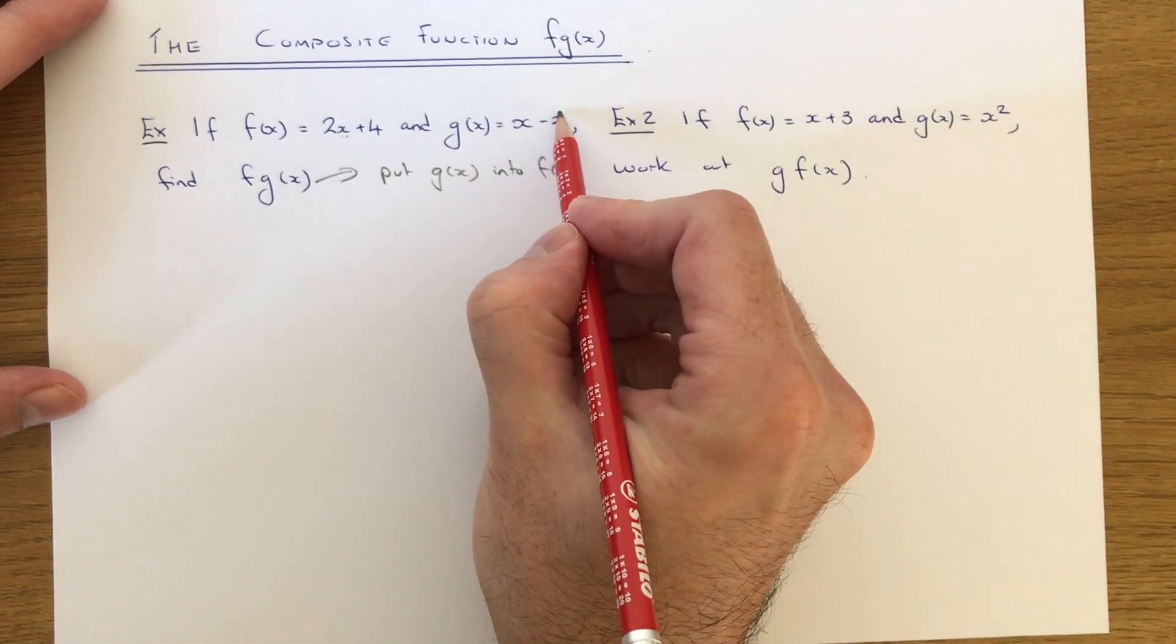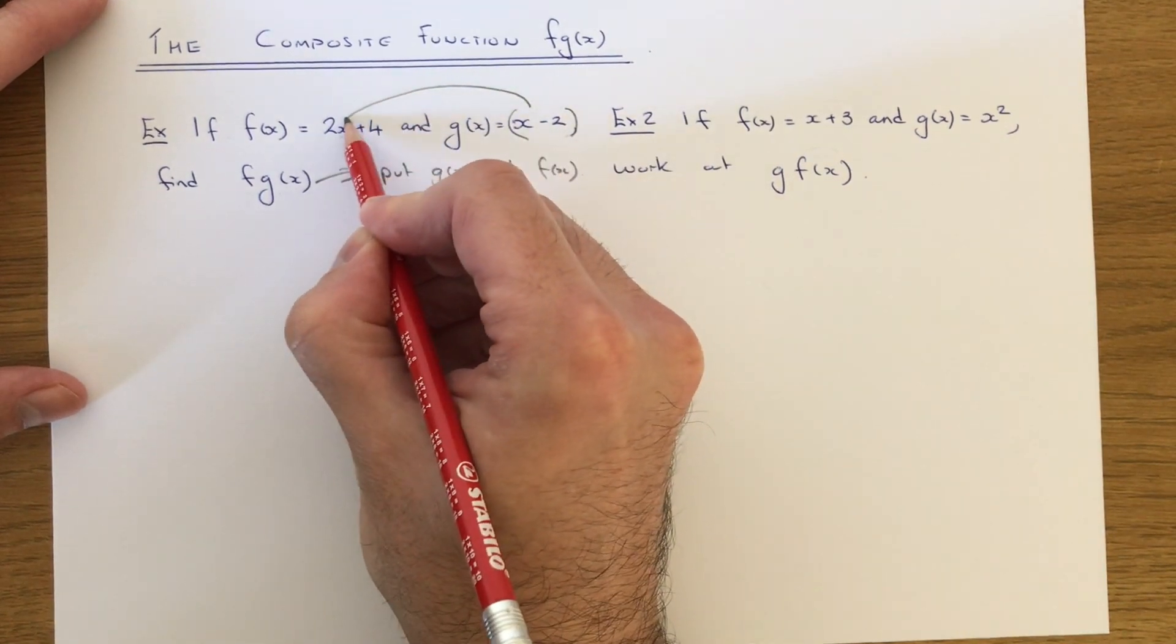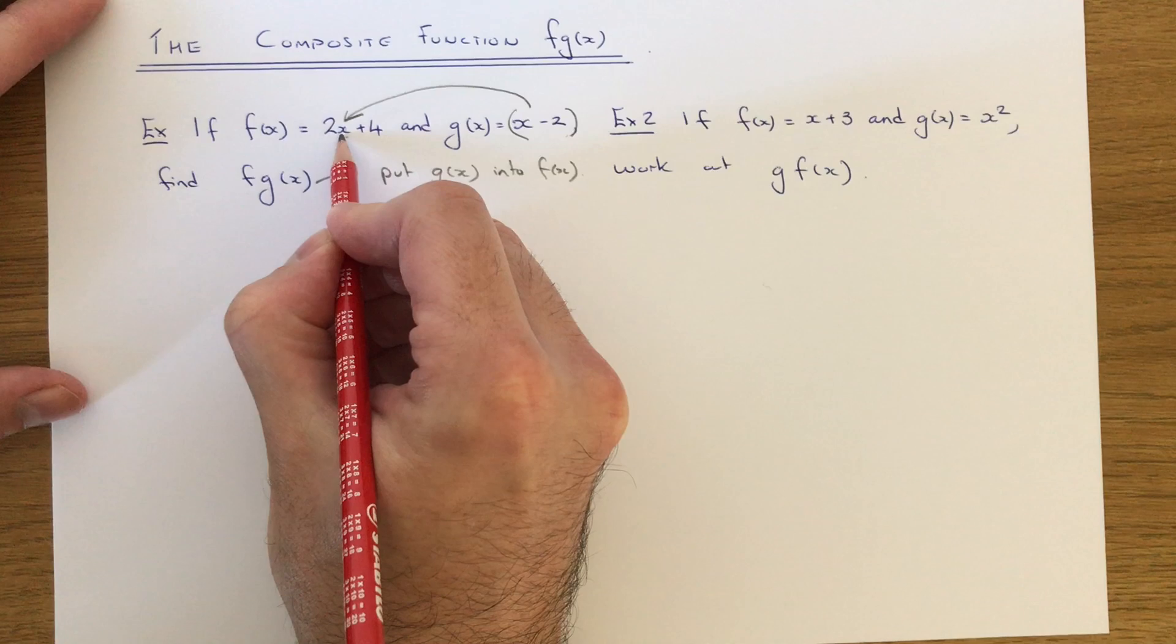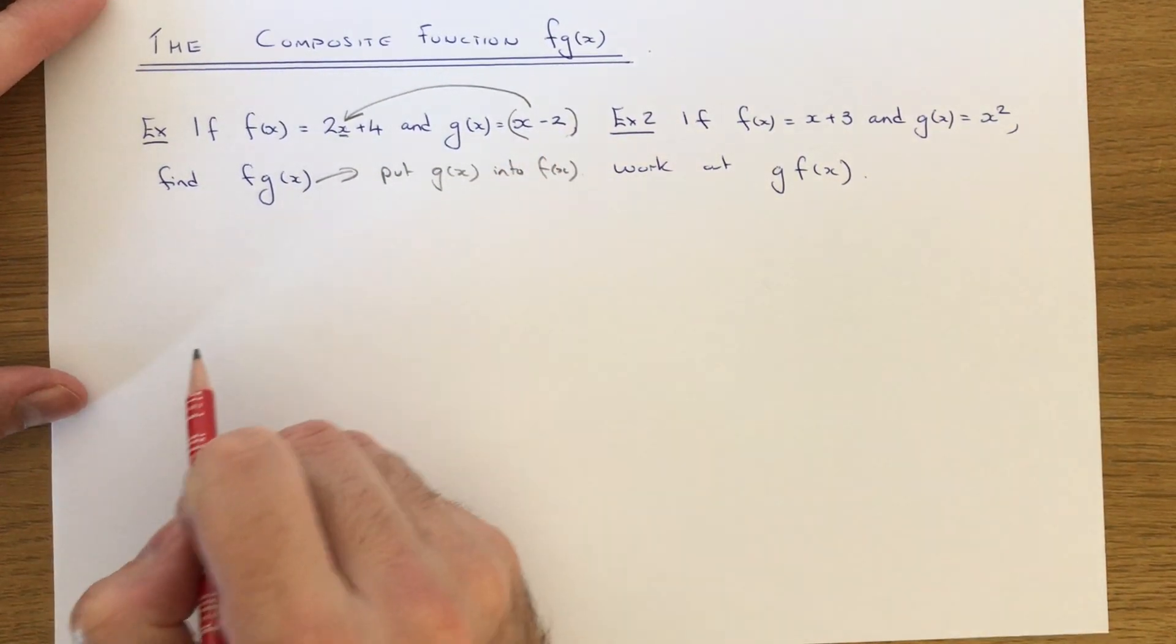So we need to get g of x, which is here, and we need to put that into f of x. So we replace the x in the function f with x minus 2.